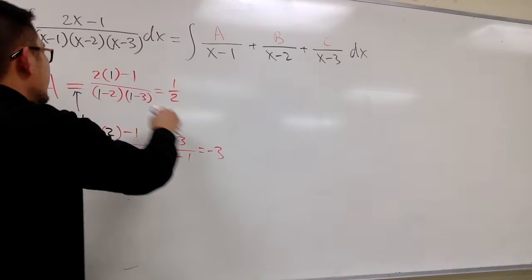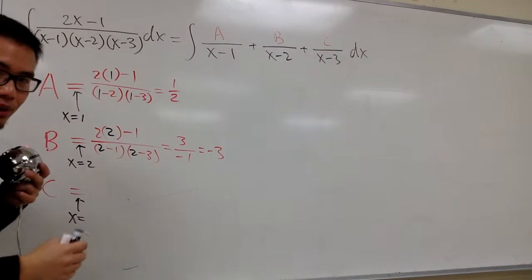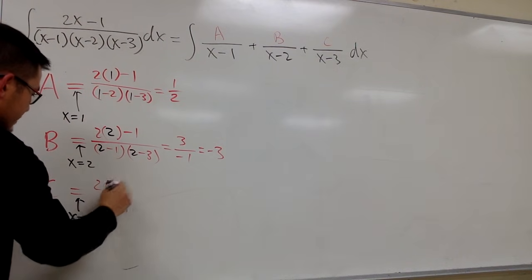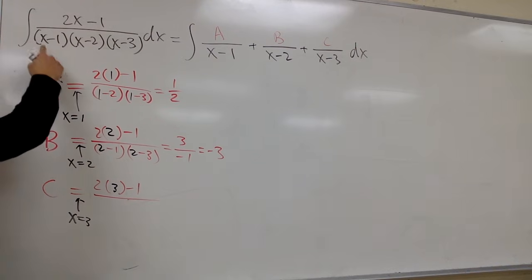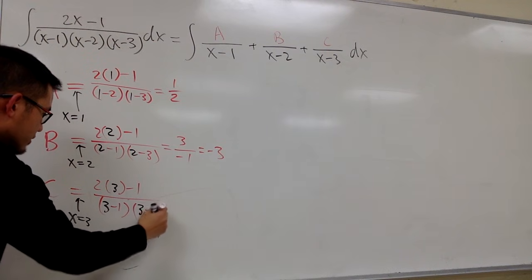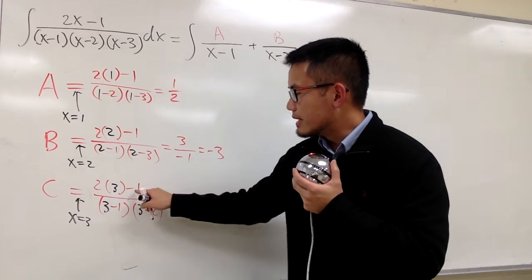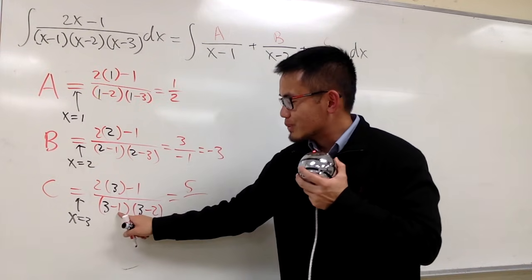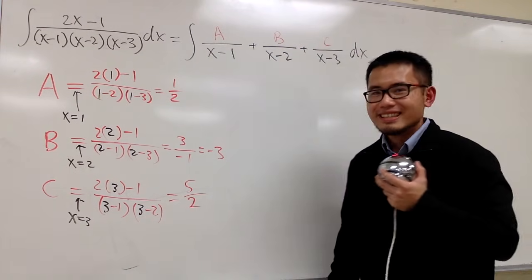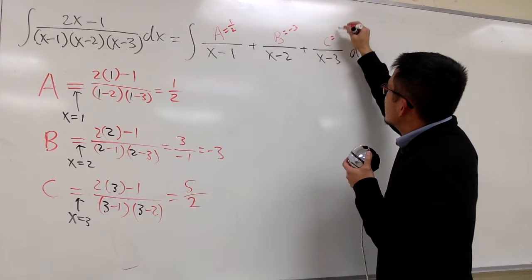For C, I cover up x minus 3. To make x minus 3 equal to 0, let x equal 3, and plug 3 into the rest. On top: 2 times 3 minus 1, which is 5. On the bottom: 3 minus 1 is 2, and 3 minus 2 is 1, so 2 times 1 is 2. Therefore C is 5 over 2. So our values are A equals one-half, B equals negative 3, and C equals 5 over 2. That's the partial fraction decomposition by the cover-up method.